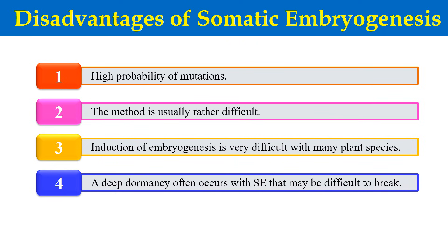The next disadvantage is dormancy. The somatic embryos formed from somatic cells are usually dormant, and it is very difficult to break their dormancy. If we want to make a plant from this embryo, we have to break their dormancy, and sometimes that is very difficult. These are some disadvantages of somatic embryogenesis.